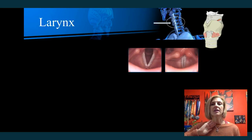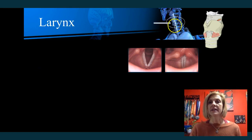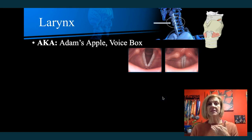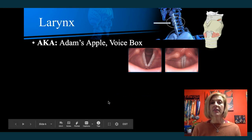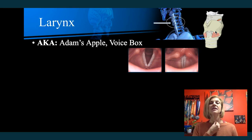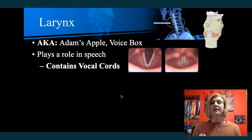Moving from the pharynx, you enter into the larynx next, but first you have to pass through the epiglottis and glottis. The larynx is located below the pharynx, under the hyoid bone — the only bone not connected to any other bone — and at the root of your tongue. It's often called the Adam's apple or the voice box. There are lots of cartilage pieces to it; the thyroid cartilage up front is the piece that protrudes in the neck region that you identify as the Adam's apple. It plays a role in speech as air moves through the larynx.